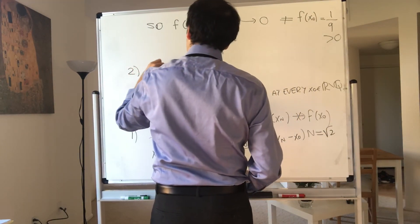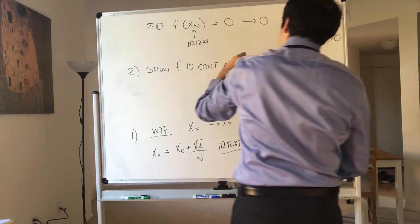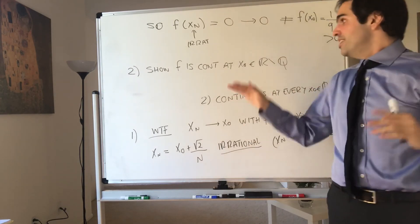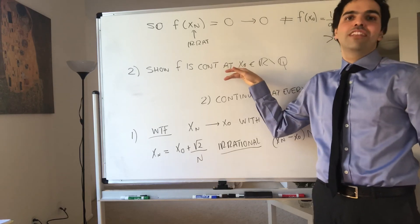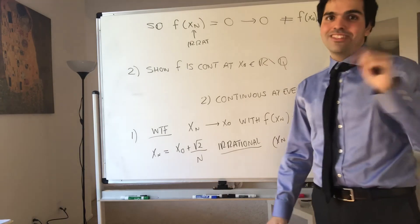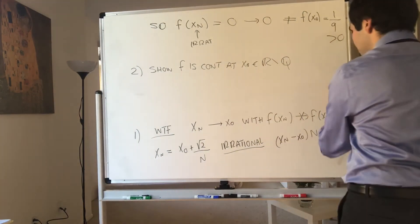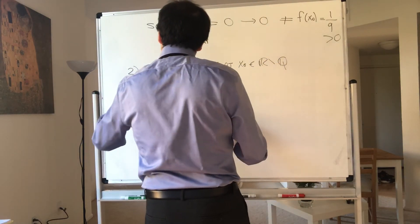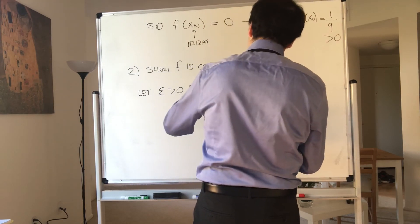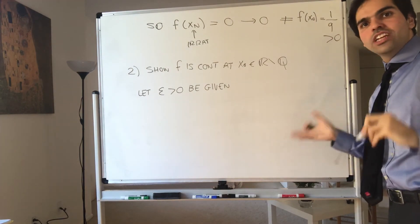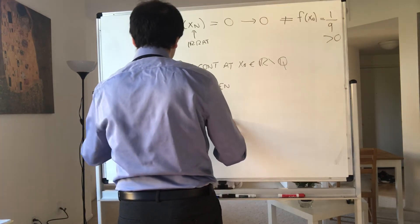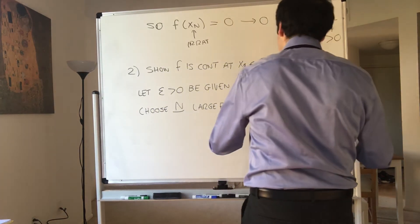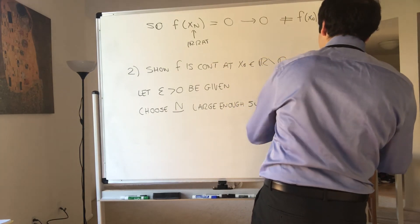So we want to show f is continuous at x-naught in ℝ\ℚ. This is a bit harder because we'd have to handle any sequence converging to x-naught, which is too complicated. So instead let's do it with epsilon-deltas. Let epsilon be given, and then choose capital N large enough such that 1 over N is less than epsilon.